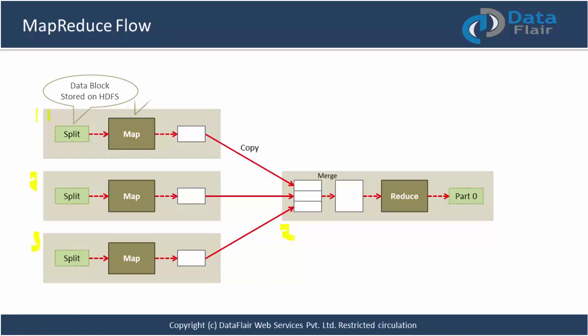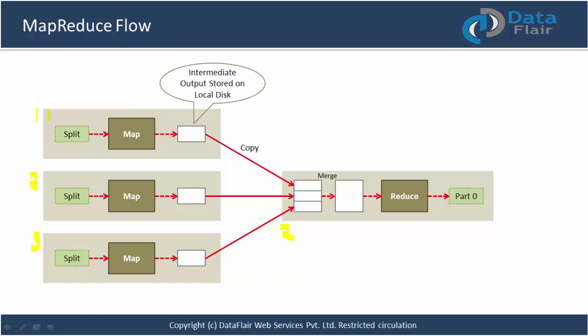The mapper, or map, is the first phase of processing. This is the location where the user can define their own custom business logic. For example, if you are solving some problem, you will write your logic in your map function; if I am solving a different problem, I will write my own logic in the map function. There are just two locations where a user can write custom code: map and reduce — mapper and reducer.